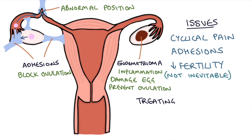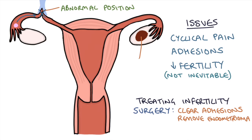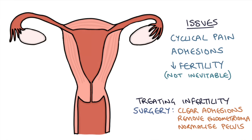To treat reduced fertility in endometriosis, the number one method is surgery. The intention is to correct the possible causes of infertility: first, to clear any adhesions surrounding the ovary or blocking egg release; second, to remove any cysts containing endometriosis on the ovaries, reducing the risk of inflammation and damage to eggs; and third, to normalise as much as possible the structure and position of the pelvis to optimise the chances of achieving a normal pregnancy.